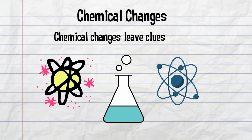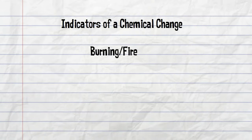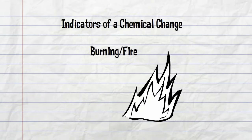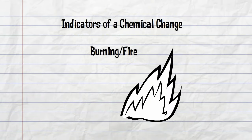Here are five indicators of a chemical change. First, if you see burning or fire, you have a chemical change.